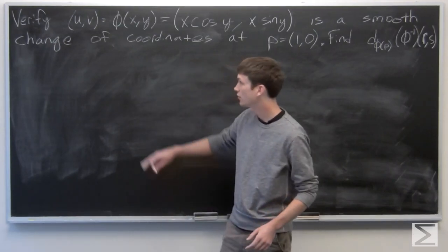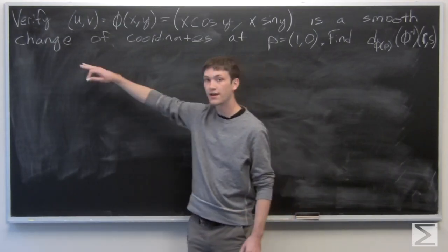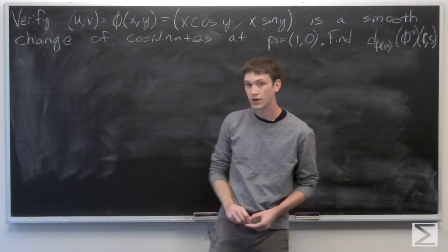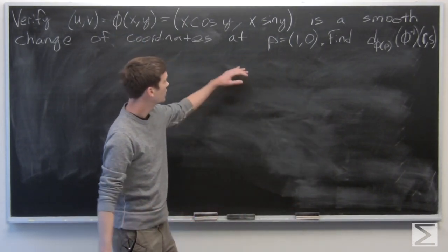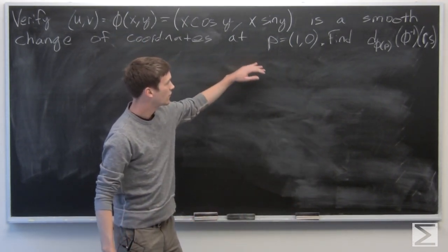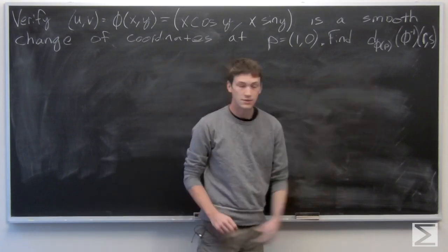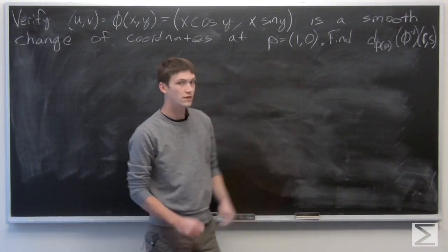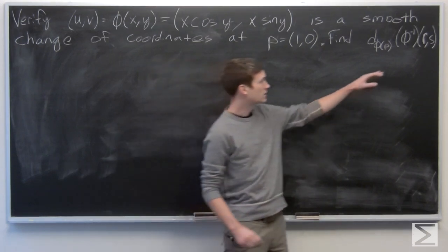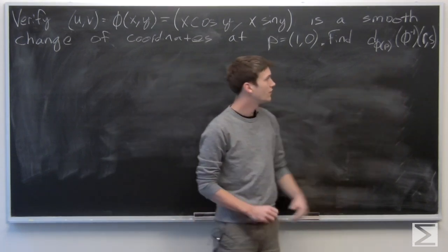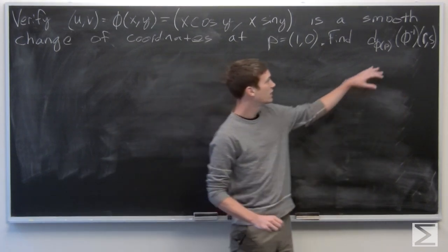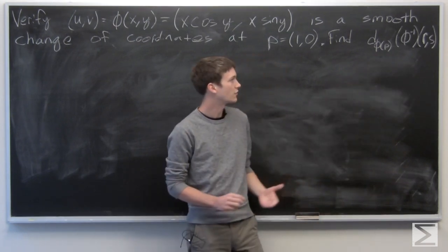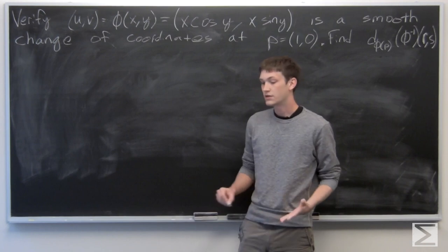In this problem, we're asked to verify that our function phi of xy is equal to (x cosine y, x sine y) is a smooth change of coordinates at the point p equals (1, 0). Then we're asked to find the total derivative of phi inverse at phi of p with respect to some vector (r, s).